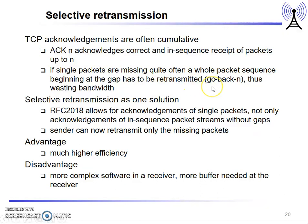The next optimized protocol is selective retransmission. In standard TCP, acknowledgements are cumulative — for every packet sent there is an acknowledgement. If you send n packets there will be n acknowledgements. Even if a single packet is missing, you have to retransmit the whole sequence of packets again. This is the go-back-n approach, which wastes bandwidth.